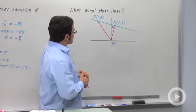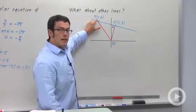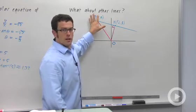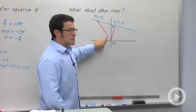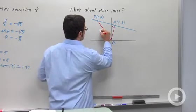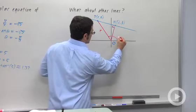First of all, let me observe that since the coordinates of point P here, this is just any arbitrary point on the line, are R theta, this distance is R, and this angle is theta.